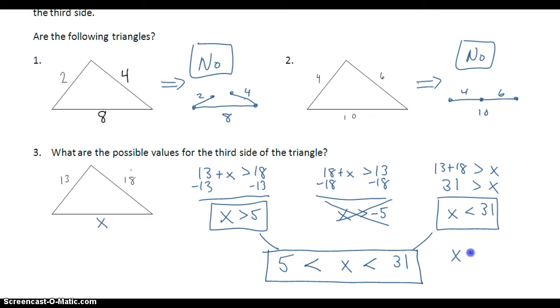So could I have an x value that's 7? Yeah. Could I have an x value that's 5? Well, no, because 5 is not greater than 5. But if I make x just slightly bigger than that, like 5.1, yes. All of the x values between 5 and 31 are possible values for this third side.